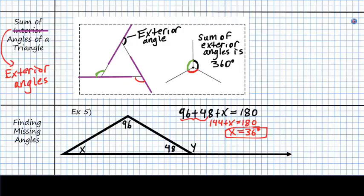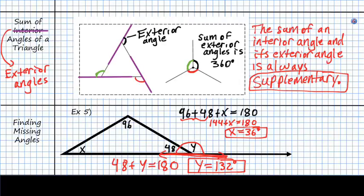For y, we can do something similar, right? So there's a couple different ways that you might solve y. The way that I'm going to solve it is I'm going to note that an interior and exterior angle appear to be supplementary. And that's always going to be true whenever you have a line like this. So they are indeed going to be supplementary. So then 48 plus y will equal 180. And then y is equal to 132 degrees. So that's one more fact that you can write here about exterior angles. So we can say that the sum of an interior angle and its exterior angle is always supplementary.